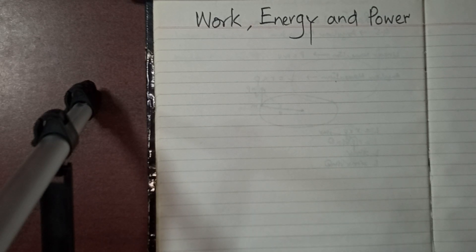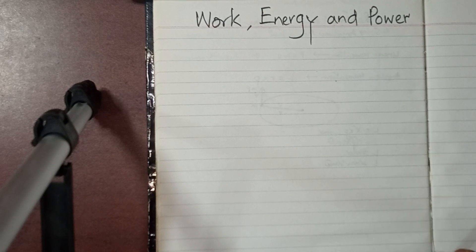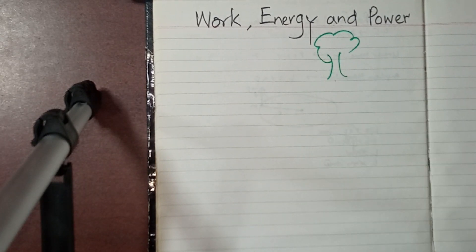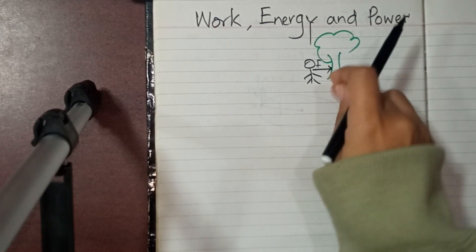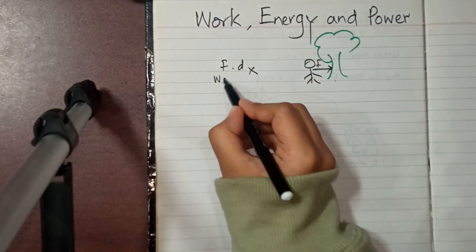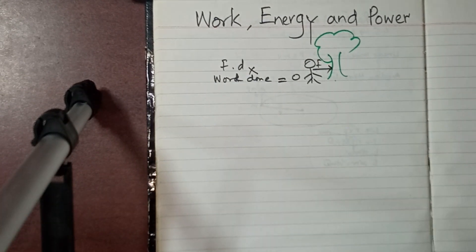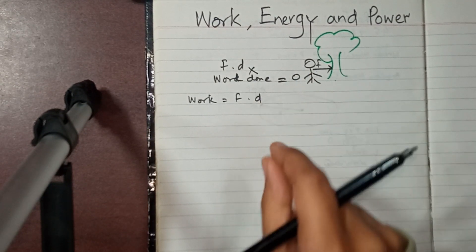First we must know what is work. Work is when a force is applied on any object and it covers some displacement — that is called work. This means that force must be applied and displacement must also be covered. For example, if a person pushes a tree but the tree doesn't move, displacement is not covered, so work done is zero.